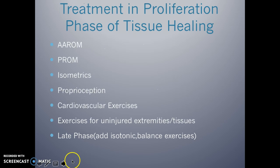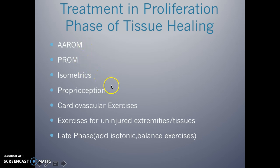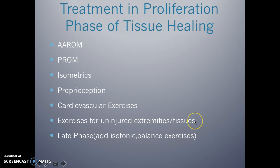In the proliferation phase, you can do active assistive range of motion, passive range of motion, isometrics, proprioception work, and cardiovascular exercises, along with exercises to the uninjured extremities. Towards the end of this phase — around the third week, if everything is going well — you can start adding isotonic and balance exercises.